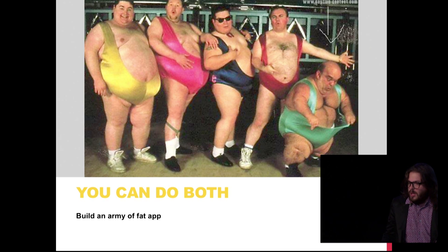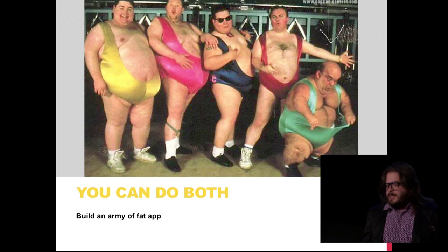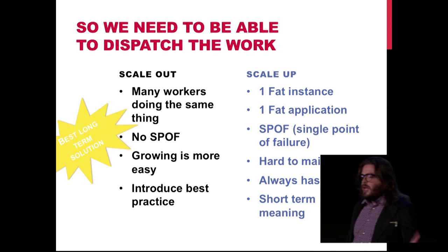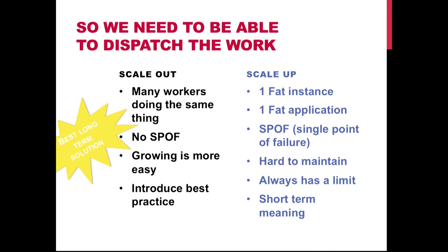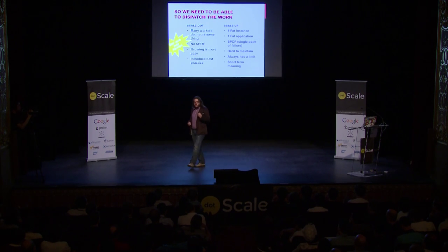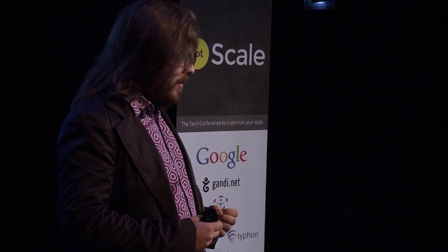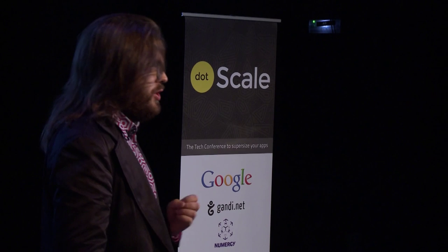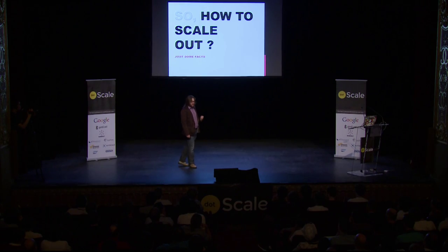We can also have a fat team of superheroes working together to make something great. This is the difference between scale-out and scale-up. If you scale-out, you have many workers doing the same thing — you have no single point of failure. You can grow, and you introduce big practices in your code base. This is why the real question is how to scale-out.